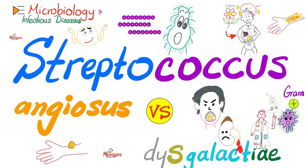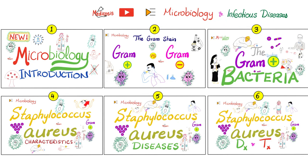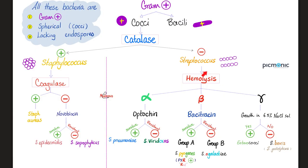Similar to Streptococcus pyogenes? That's right. All those Streptococci are Gram-positive bacteria that happen to be cocci and catalase-negative. Streptococci are arranged in chains. Some are alpha-hemolytic, some are beta-hemolytic, some are gamma-hemolytic. The two bacteria we're discussing today are beta-hemolytic.